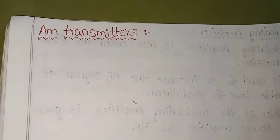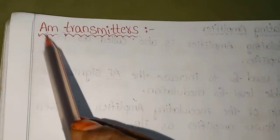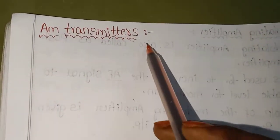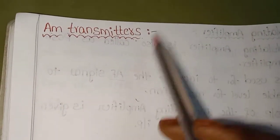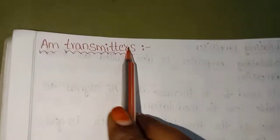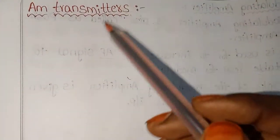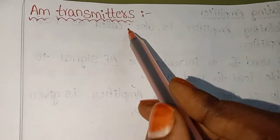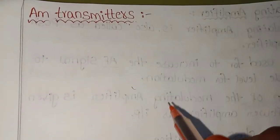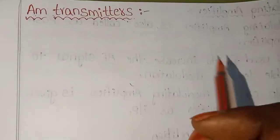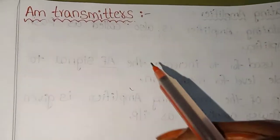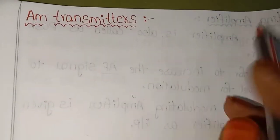Hello Friends! Today our topic is AM Transmitters. There are two types of AM Transmitters: High Level Transmitters and Low Level Transmitters.